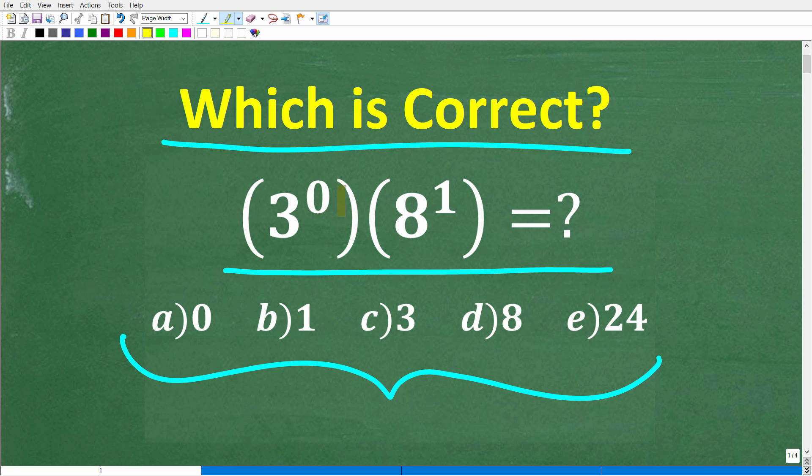The problem is the following: we have 3 to the 0 power times 8 to the 1st power. Let's take a look at our choices. A is 0, B is 1, C is 3, D is 8, and E is 24.